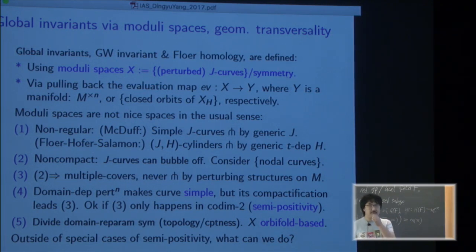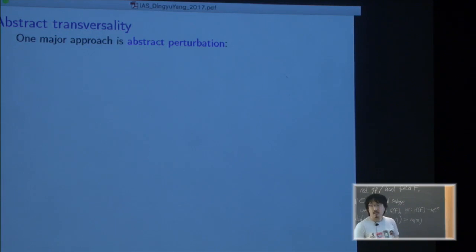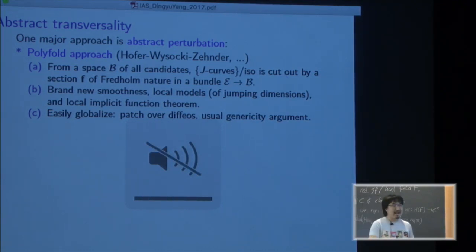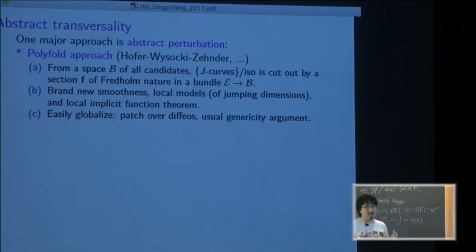So out of the semi-positive objects what can we do? For example, Fano Calabi-Yau. So the major approach is abstract transversality. There's a polyfold theory developed by Hofer, Wysocki and Zehnder. The idea is that you build your ambient space of all the candidates, you cut out your X by some Fredholm section. It introduces a very brand new idea of smoothness, local model and the local implicit function theorem. The upshot is it's very easy to globalize local things patched over by diffeomorphism and you just apply the usual genericity argument.